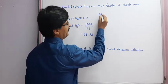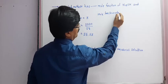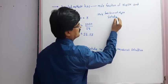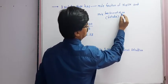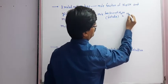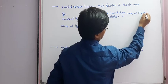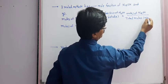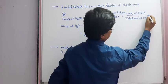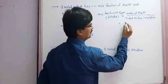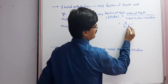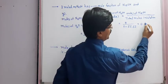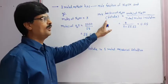Now, mole fraction of NaOH equals moles of NaOH divided by total moles in solution, which is 3 divided by (3 plus 55.55). On solving this, we get 0.05. So mole fraction of solute (NaOH) is 0.05.